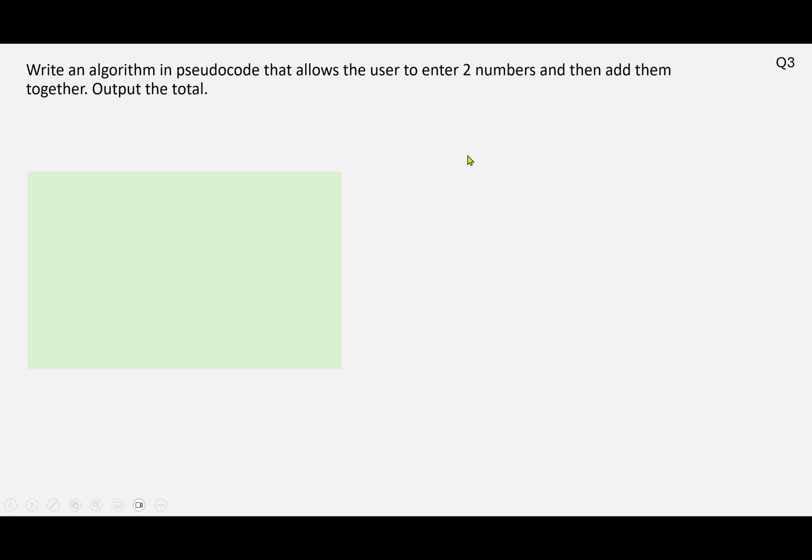So again, let's pick apart this question and look for the inputs, the outputs, any processing and anything that's going to be repeated. So we're entering numbers, so we've got some input here. We're asked to enter two numbers, so we can use a loop, so we've got some repetition there.